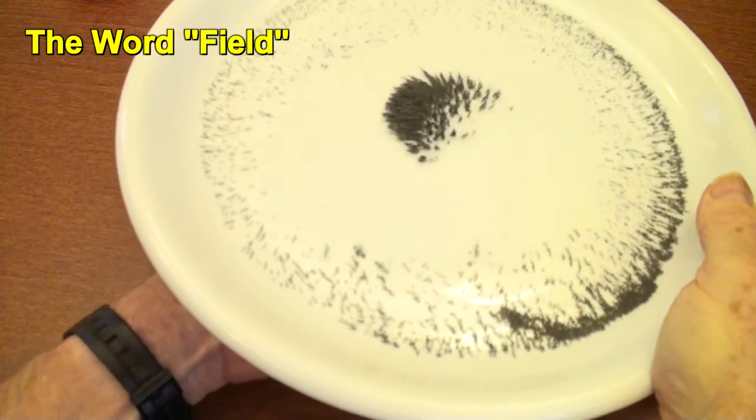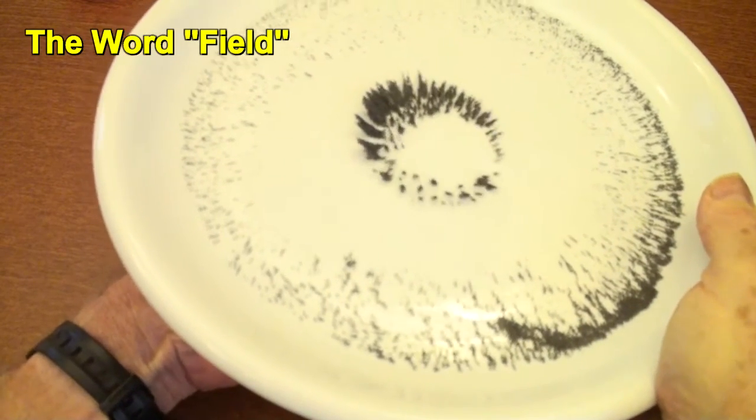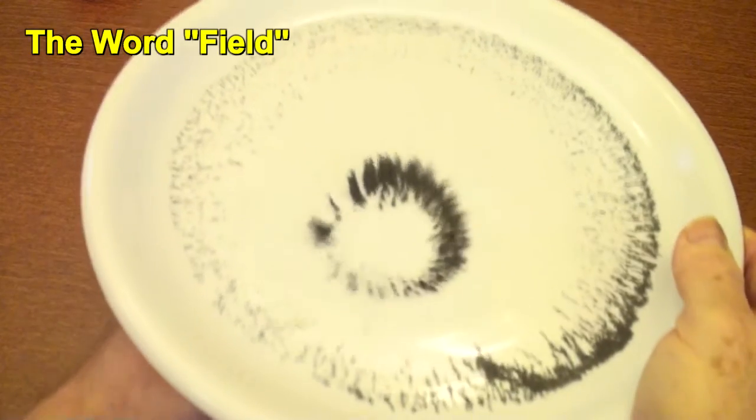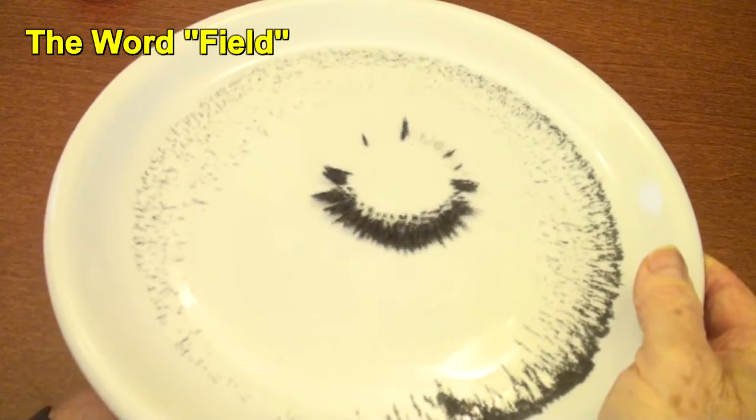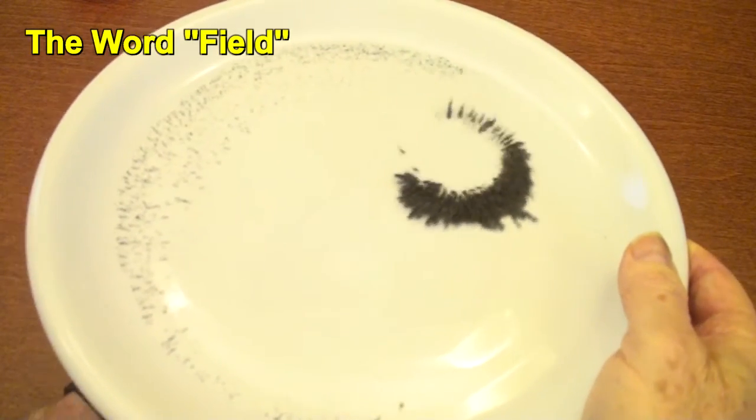Faraday used iron filings to show the magnetic field extending out past the magnet. That mystified the crowds at the Royal Society.